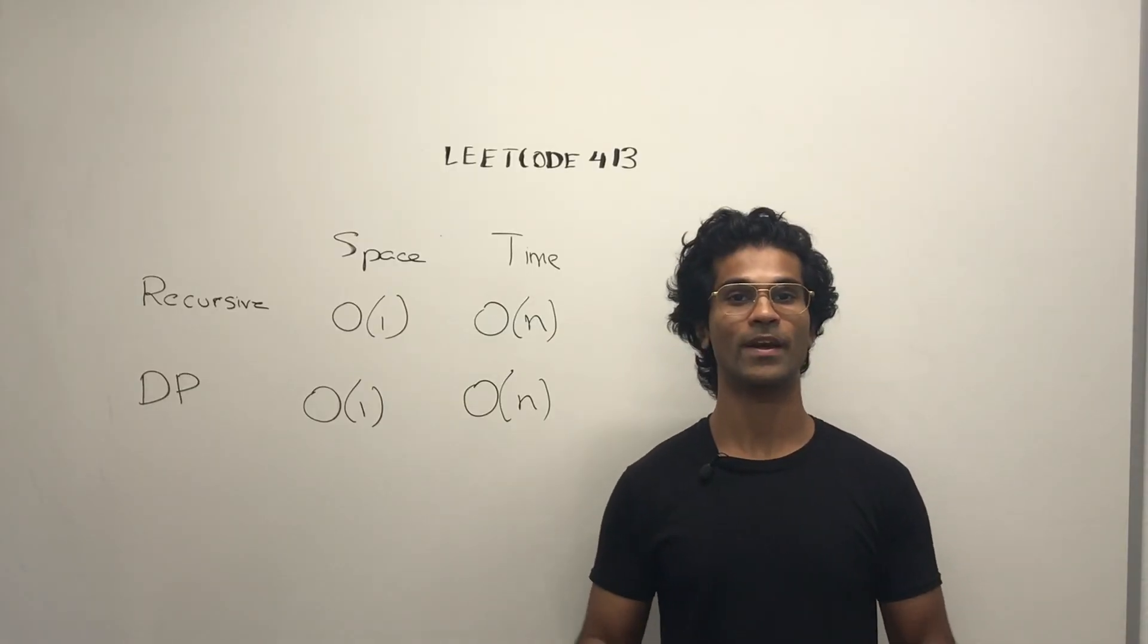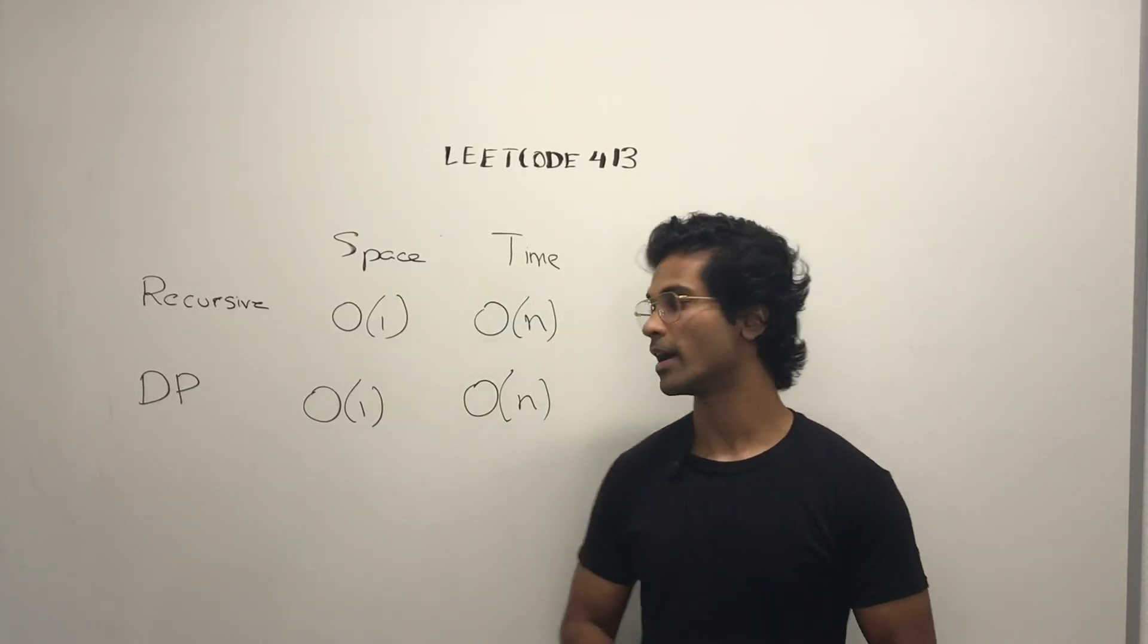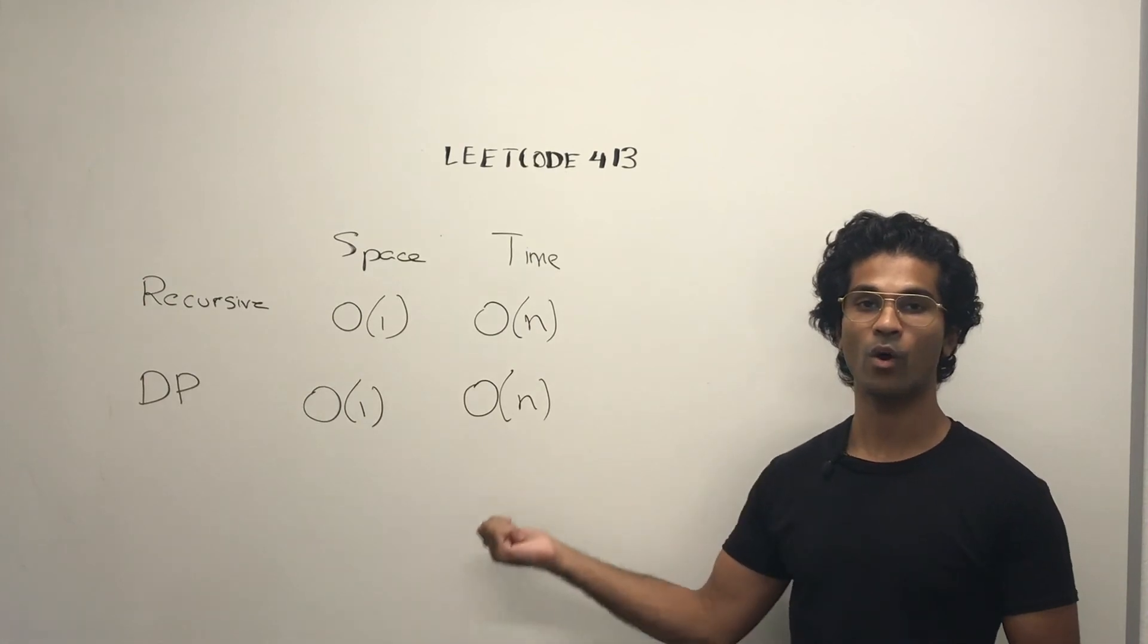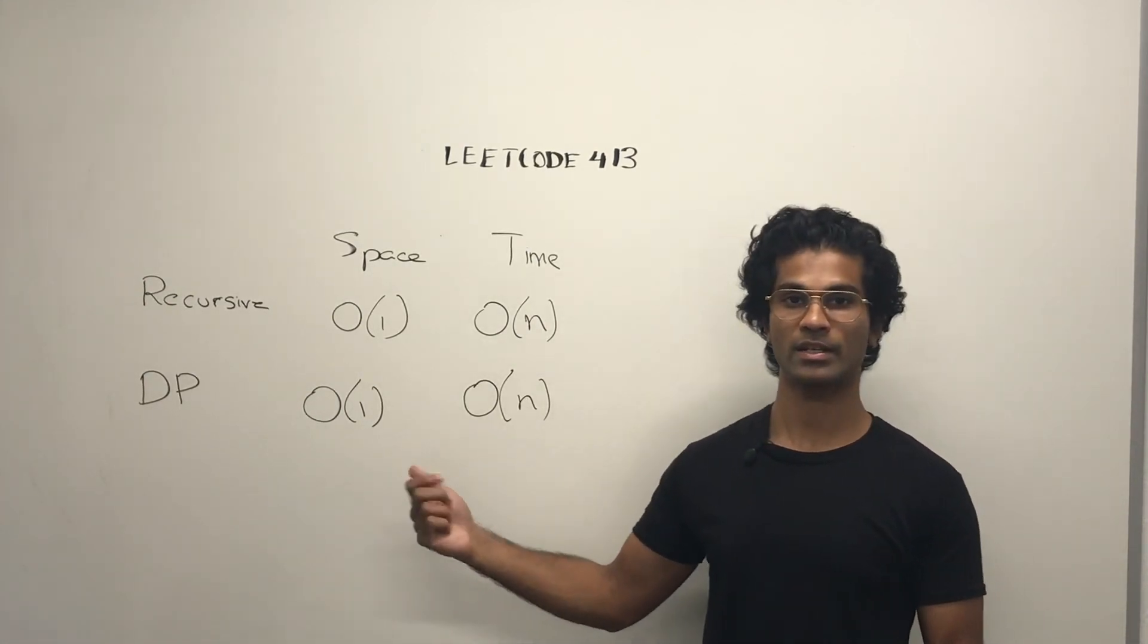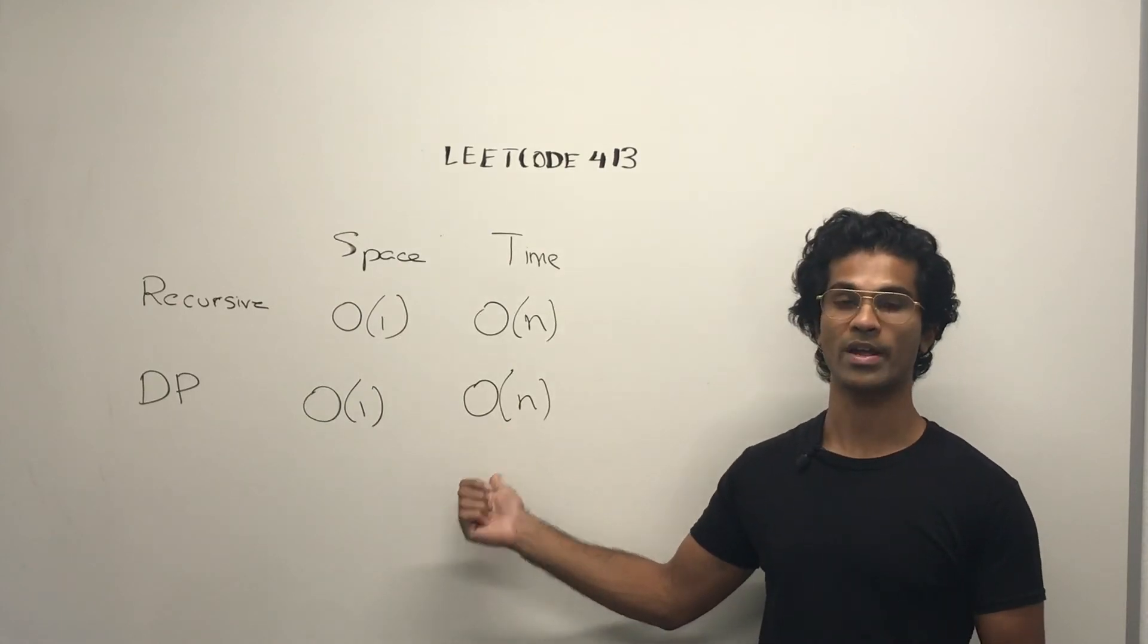Time and space complexity for the DP approach, we have O(1) for space and O(n) for time. We don't really use any additional space, and we're going through the entire array once.